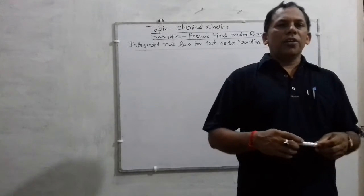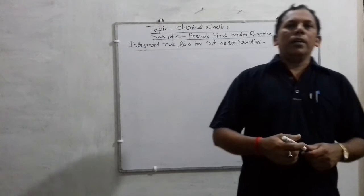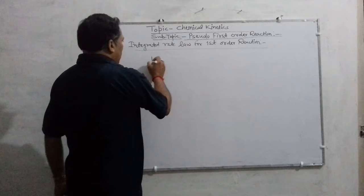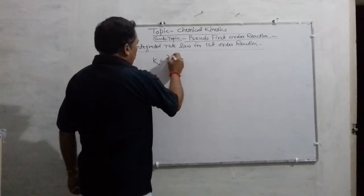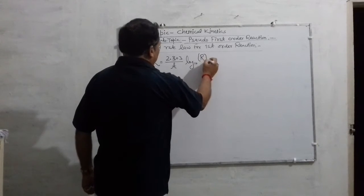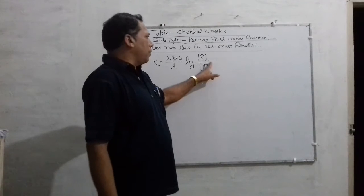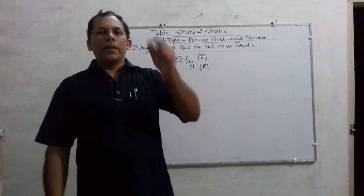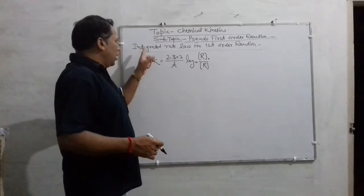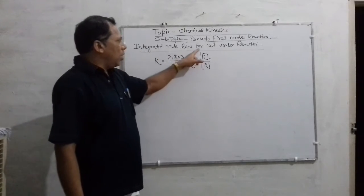Half-life period is the time at which the concentration of the reactants becomes half of its initial concentration, and it is represented by T half. You have derived the first order rate constant: K is equal to 2.303 by T into log₁₀ of [R₀] upon [R], where R₀ is the initial concentration and R is the final concentration of the reactant. This expression is called the integrated rate law for first order reaction.